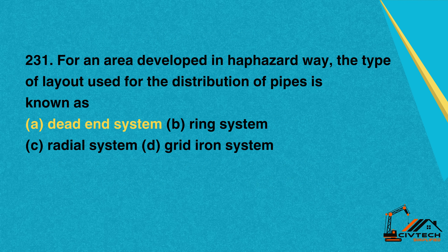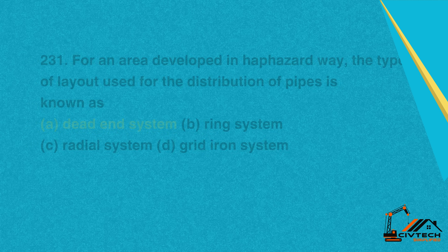Question 231: For an area developed in a haphazard way, the type of layout used for the distribution of pipes is known as. A. Dead end system. B. Ring system. C. Radial system. D. Grid iron system. Correct option: A. Dead end system.